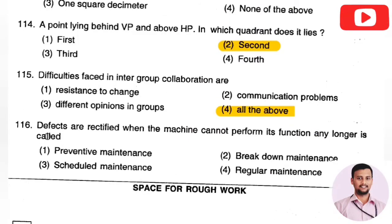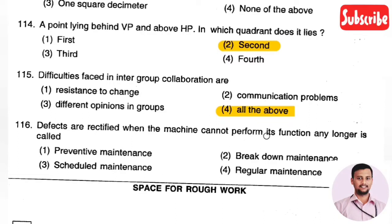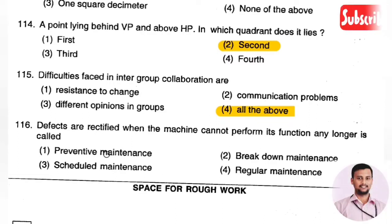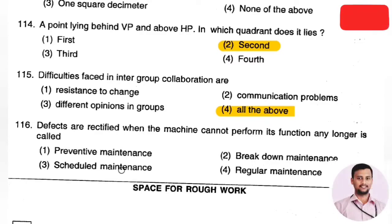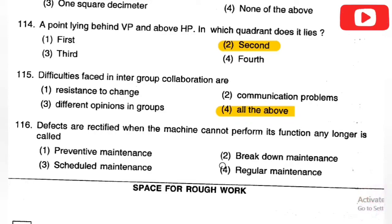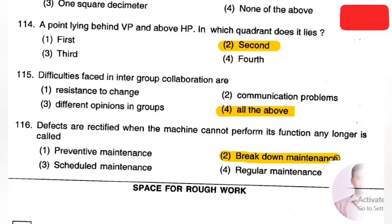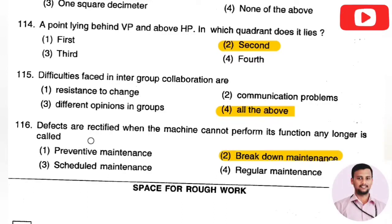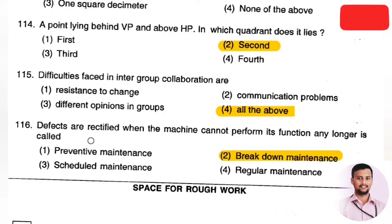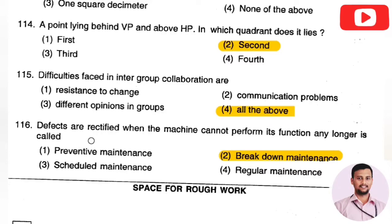The next question: the defects are rectified when the machines cannot perform their function any longer — this is called Option 1: preventive maintenance, Option 2: breakdown maintenance, Option 3: scheduled maintenance, Option 4: regular maintenance. The right answer is Option 2, breakdown maintenance.